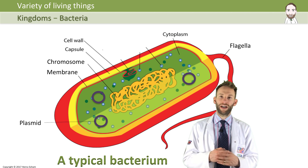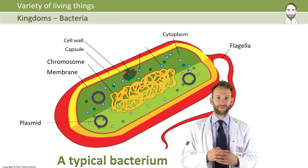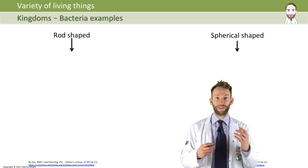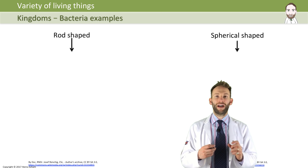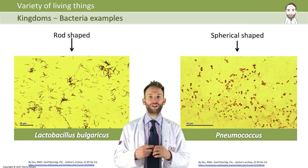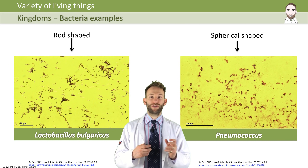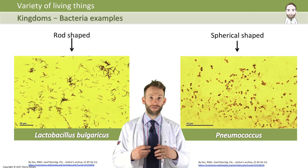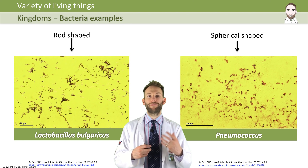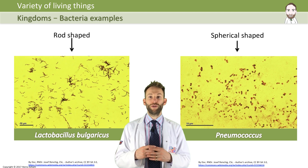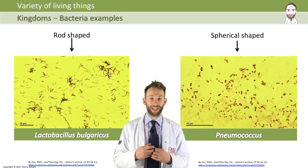They still have cytoplasm like normal cells as well. Bacteria are classified further according to their shape. Here are some rod-shaped ones — Lactobacillus bulgaricus — which are actually the ones used to make yogurt from milk. The other ones are spherical shaped and are called pneumococcus, and these are actually the ones that cause the disease pneumonia.